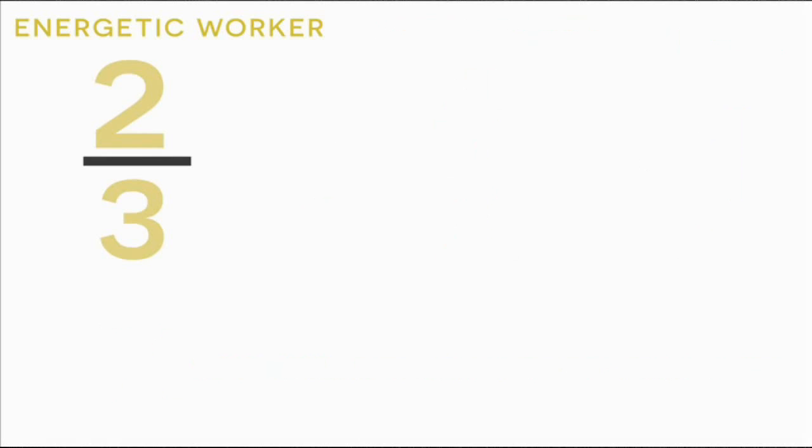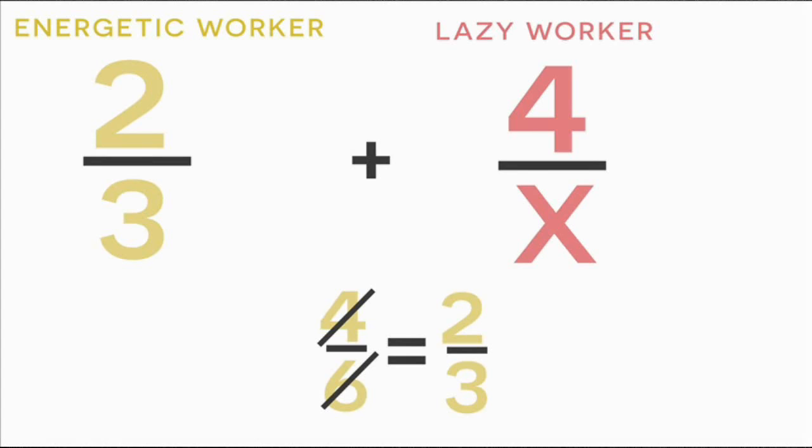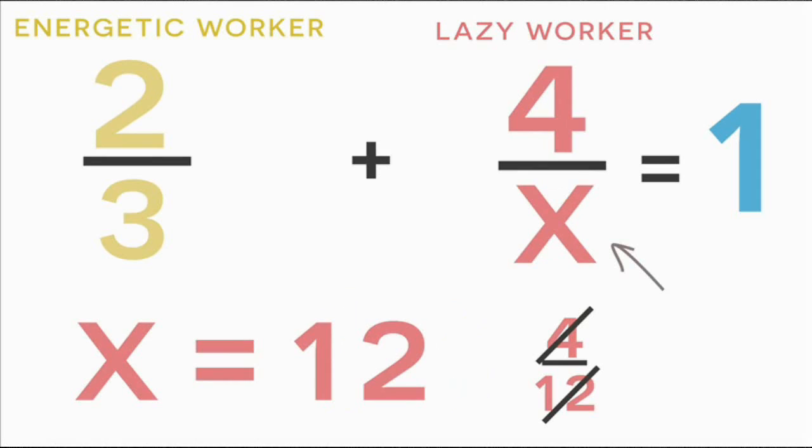So we know our first fraction is equal to two-thirds. Four over six is equal to two-thirds, which means that our second fraction must be equal to one-third in order for this equation to be true. Two-thirds plus one-third is equal to one. So if our second fraction needs to be equal to one-third, that means x must be equal to twelve. Four over twelve is equal to one-third.